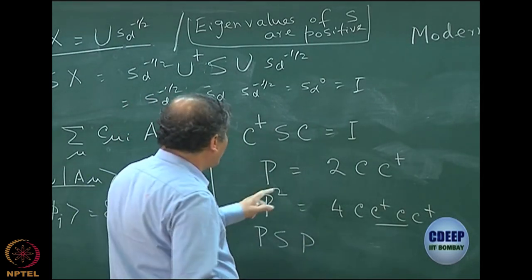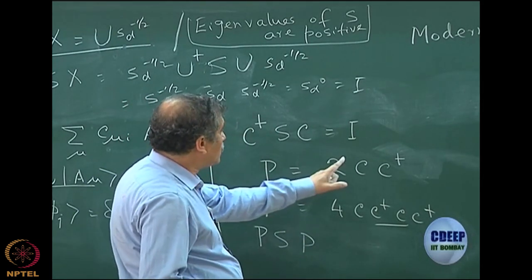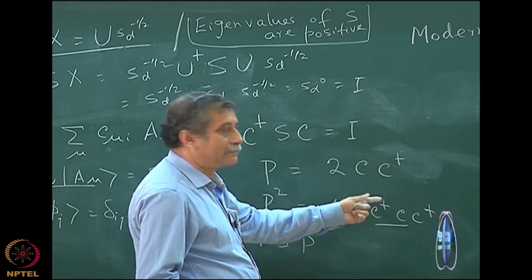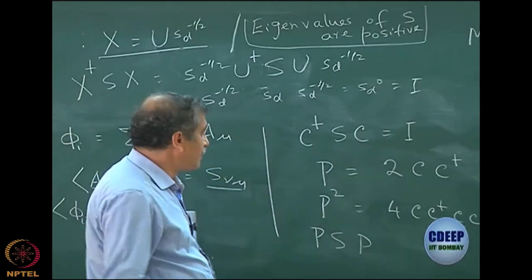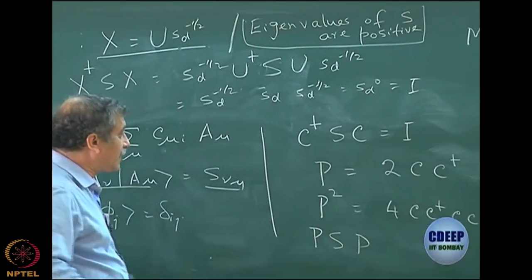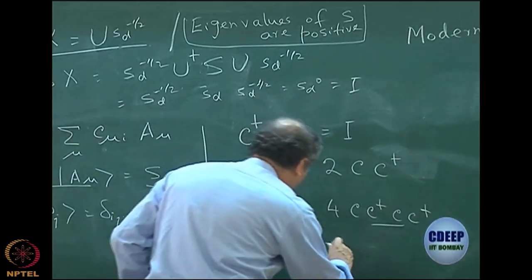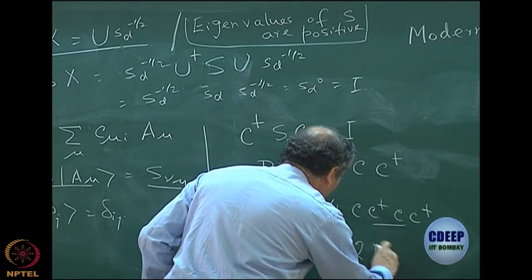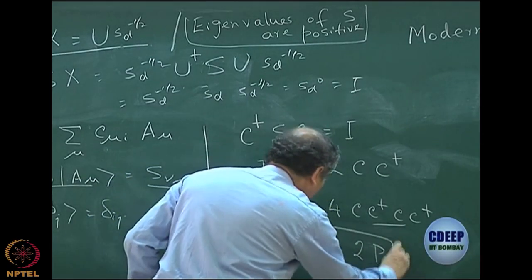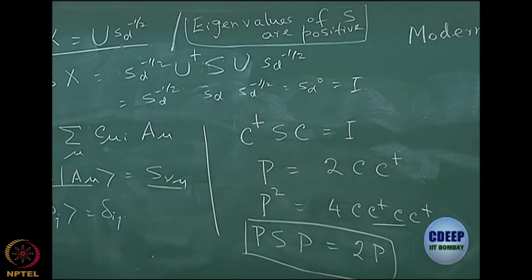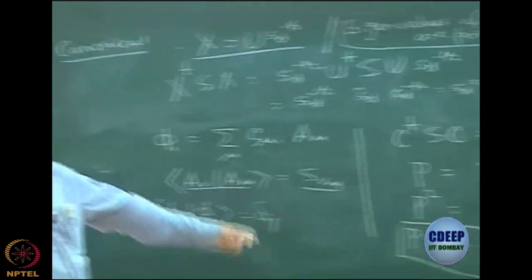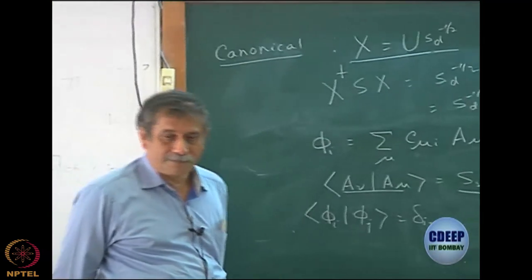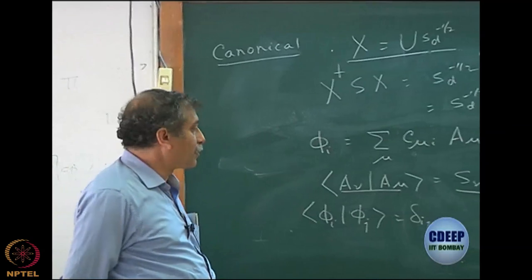What is PSP? It is 2CC†SC, so you have C†SC which is the identity matrix. So PSP, with the factor of 2, is equal to 2P. I will not do this here, but I may ask it in the midterm exam. It is very easy — I hope all of you will be able to prove that PSP equals 2P.